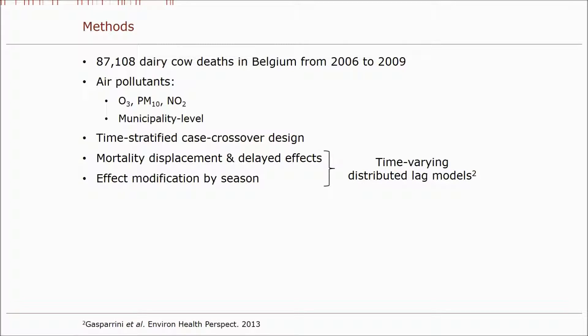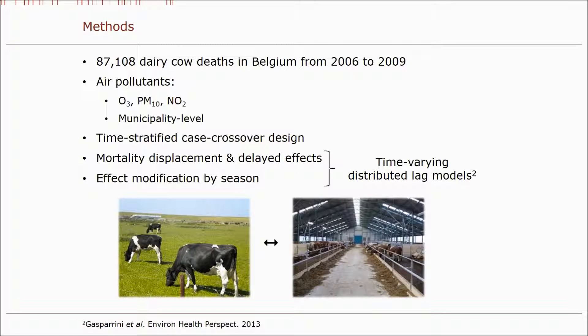We also investigated effect modification by season by using time-variant distributed lag models. We did this because some human studies have found larger associations between air pollution and mortality in summer than in winter. Moreover, free-ranging cows are mostly on pasture during summer, whereas they are continuously in the stable during winter.